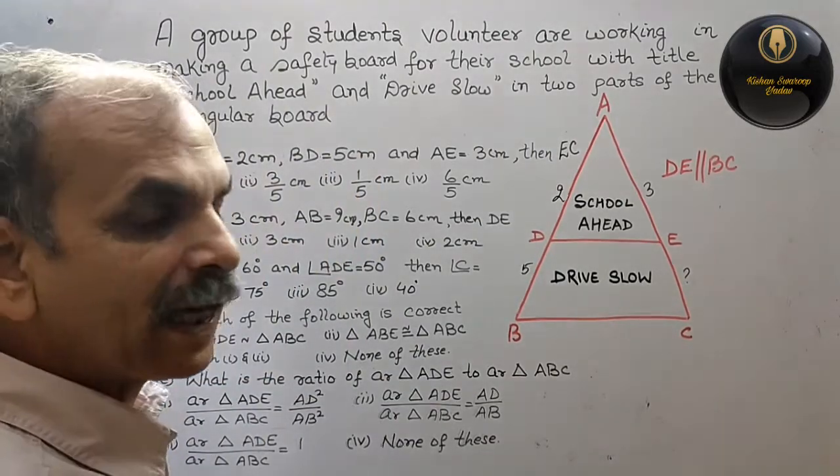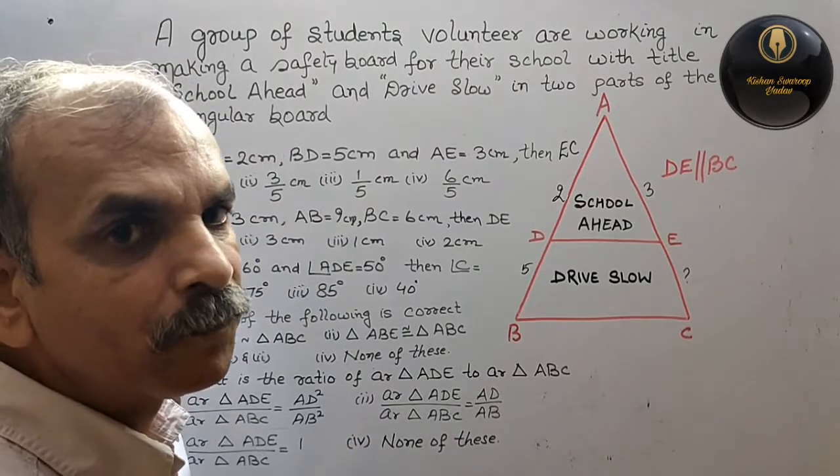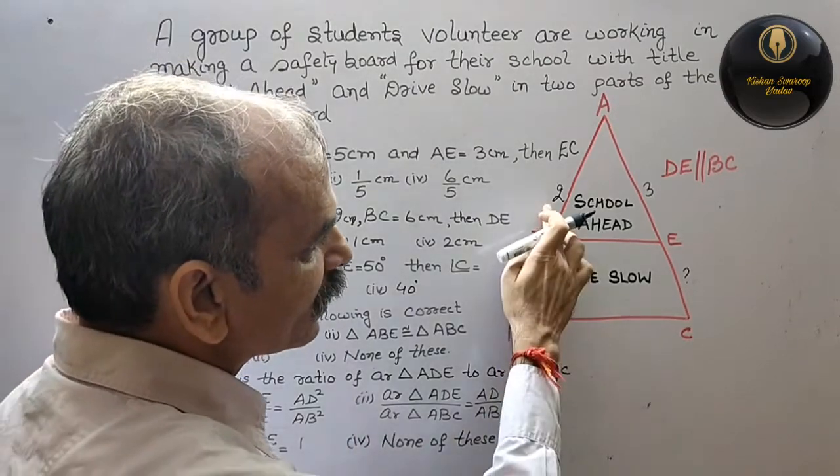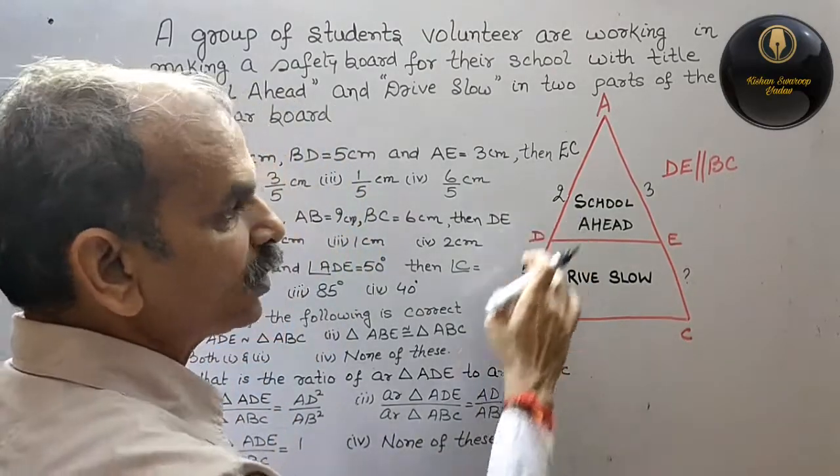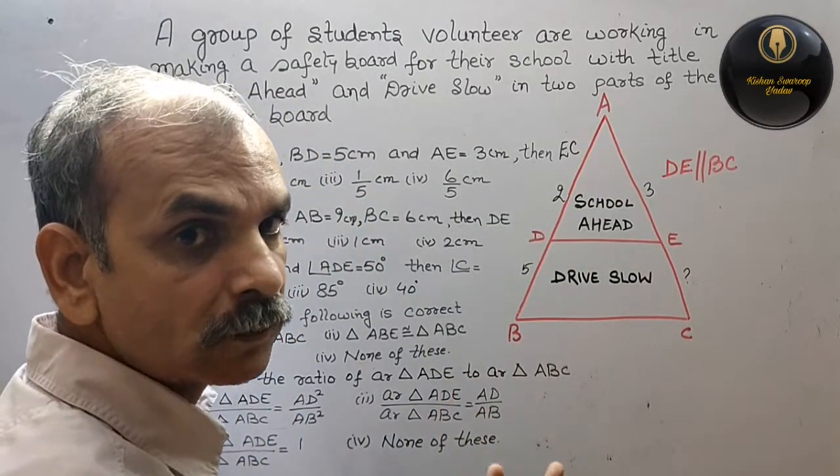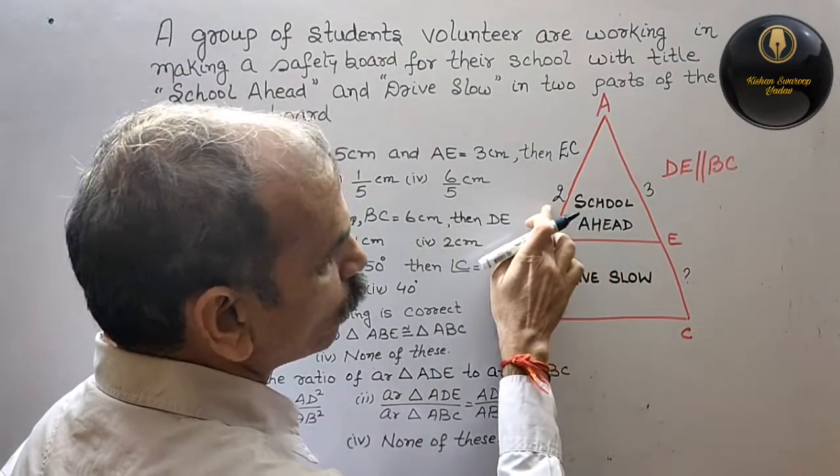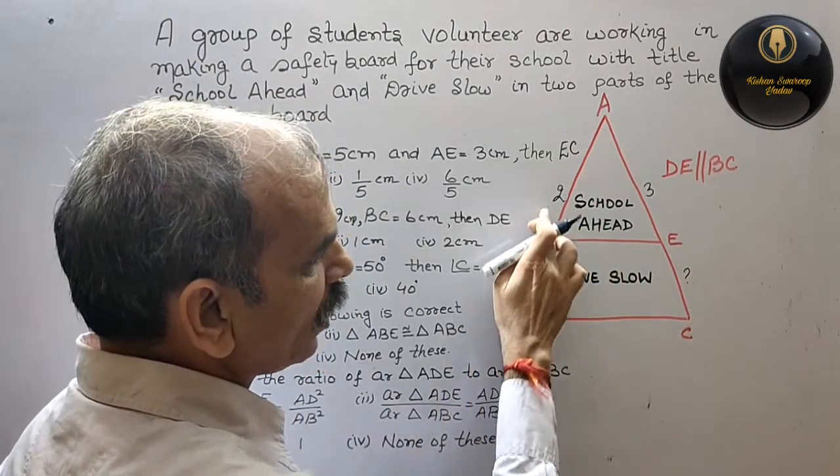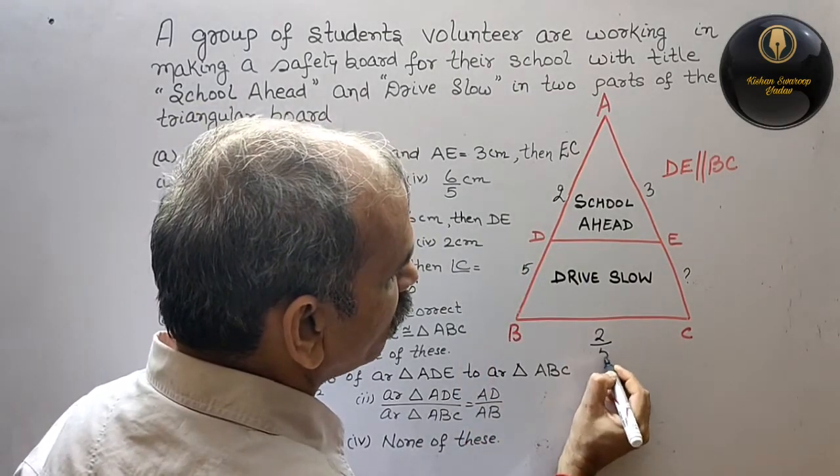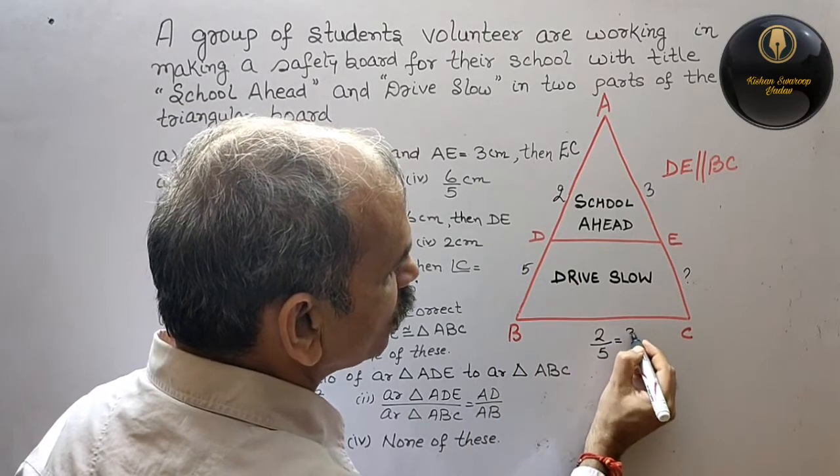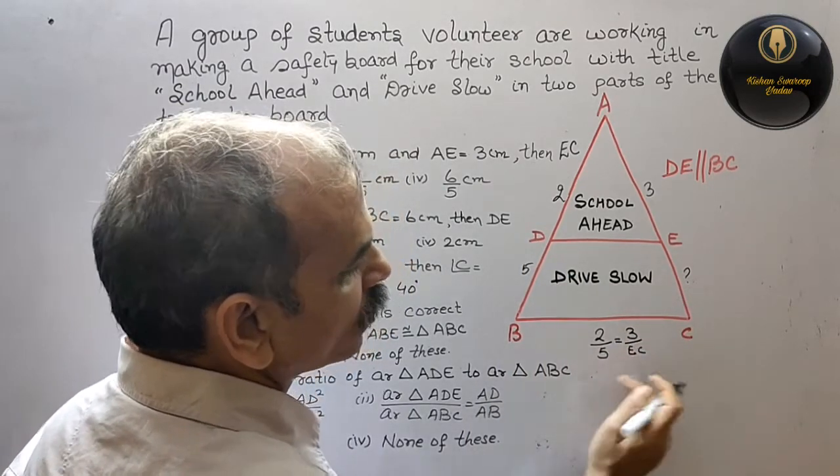So by the basic proportionality theorem, if these two are parallel, then it will come into proportion. So our proportion will be 2 by 5 is equal to 3 by EC.